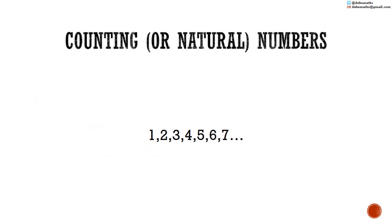We start counting 1, 2, 3, 4, 5, 6, 7, and we go on and on. This set of numbers is aptly called counting or natural numbers.